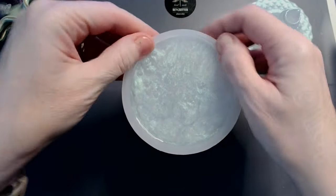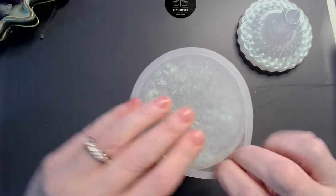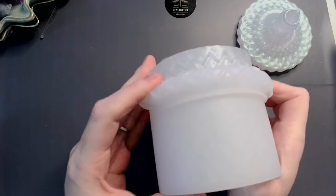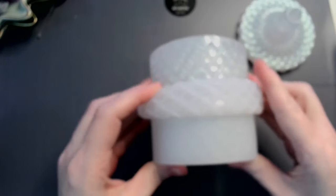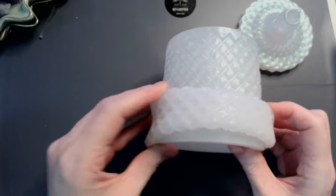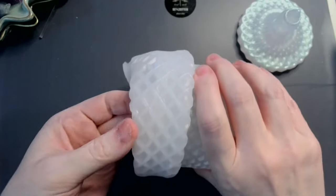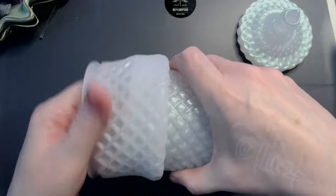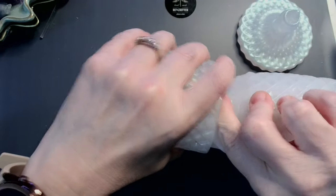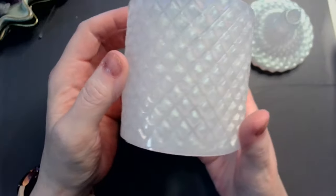Alright, now I've found that the easiest way for me to demold this is just to get it folded over and then just roll it down like a pair of pantyhose, even though I don't think I've worn pantyhose in a million years. But still, you get my meaning. There we go. You have to squeeze and twist to get the inside out.